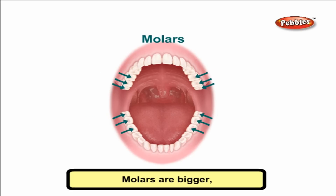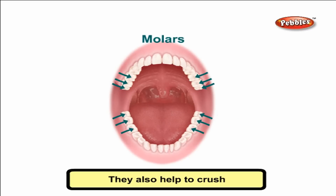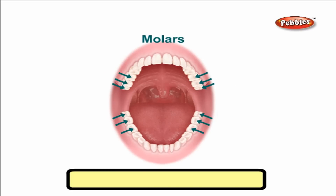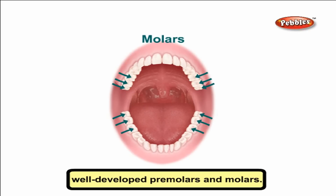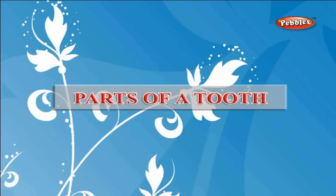Molars are bigger, flatter and broader teeth. There are 12 molars. They also help to crush and grind the food well. Plant-eating animals have well-developed premolars and molars.